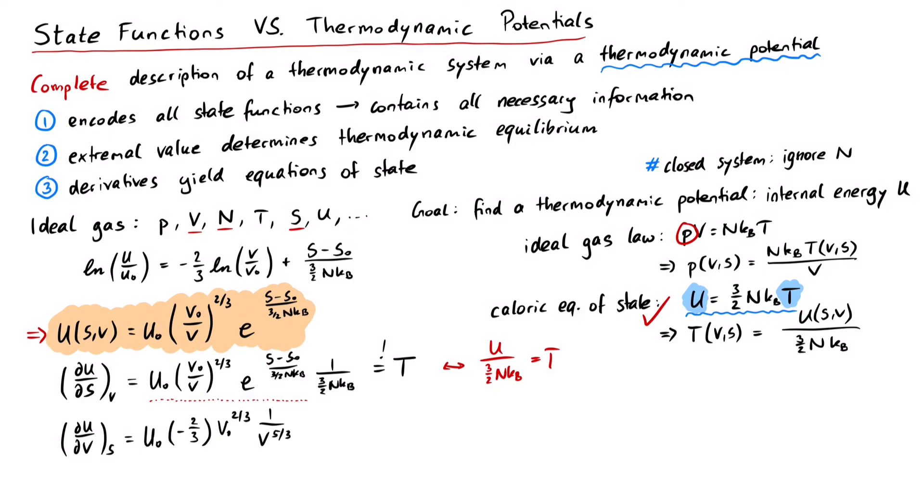And for the derivative of U with respect to V, while keeping S constant, we can again resubstitute U and get pV equals 2 thirds u. Using the caloric equation of state, this gives us the ideal gas law back.